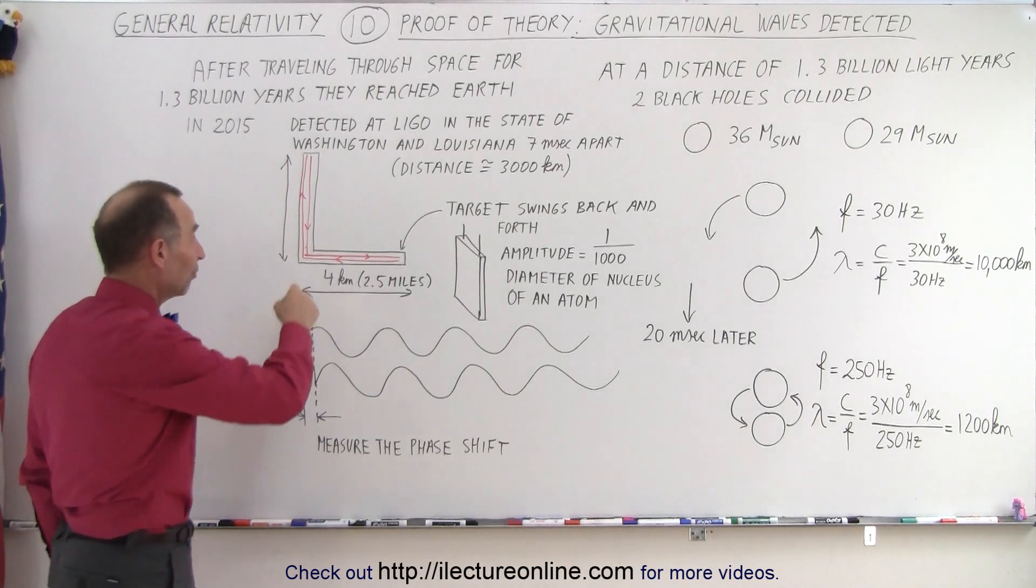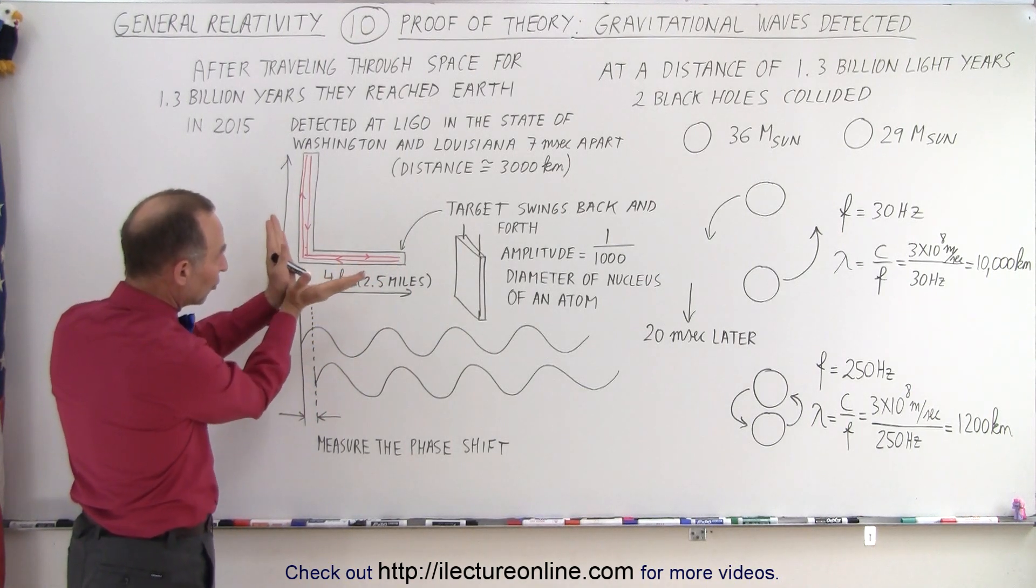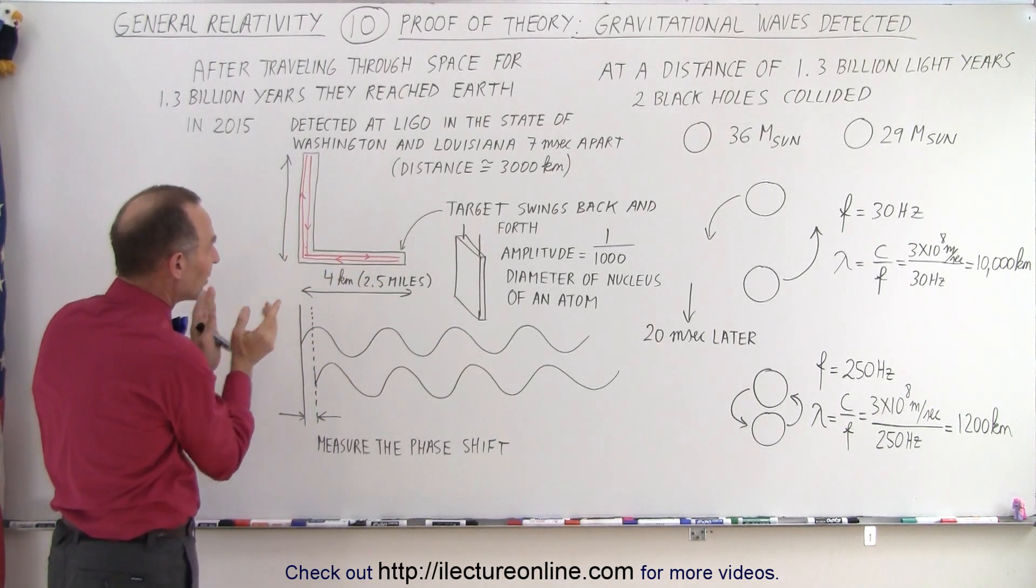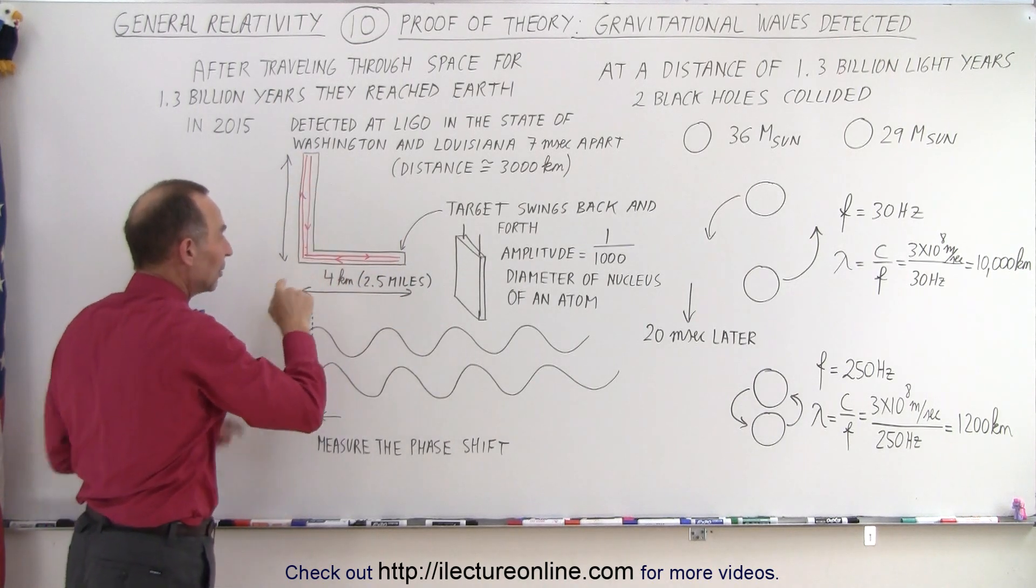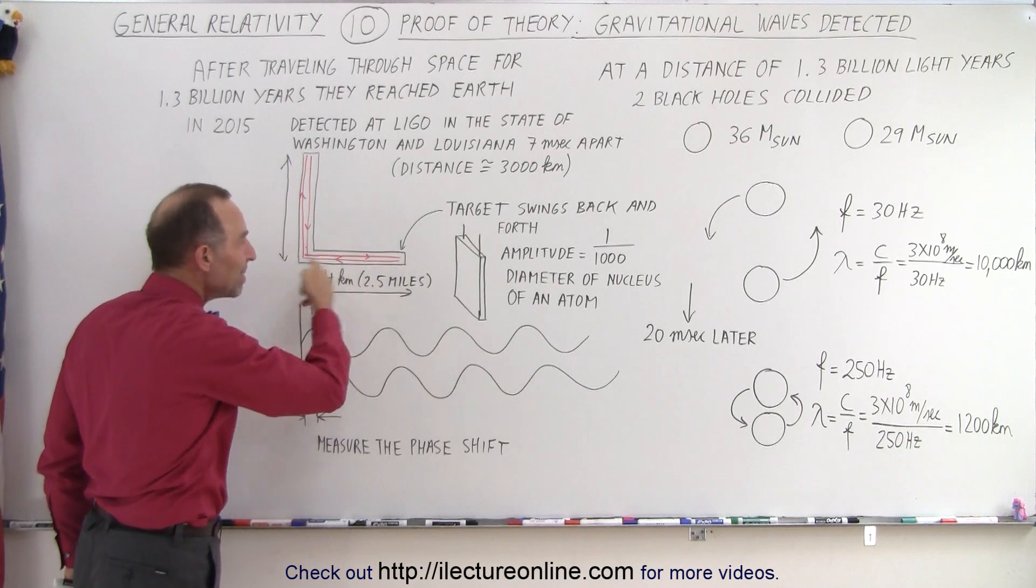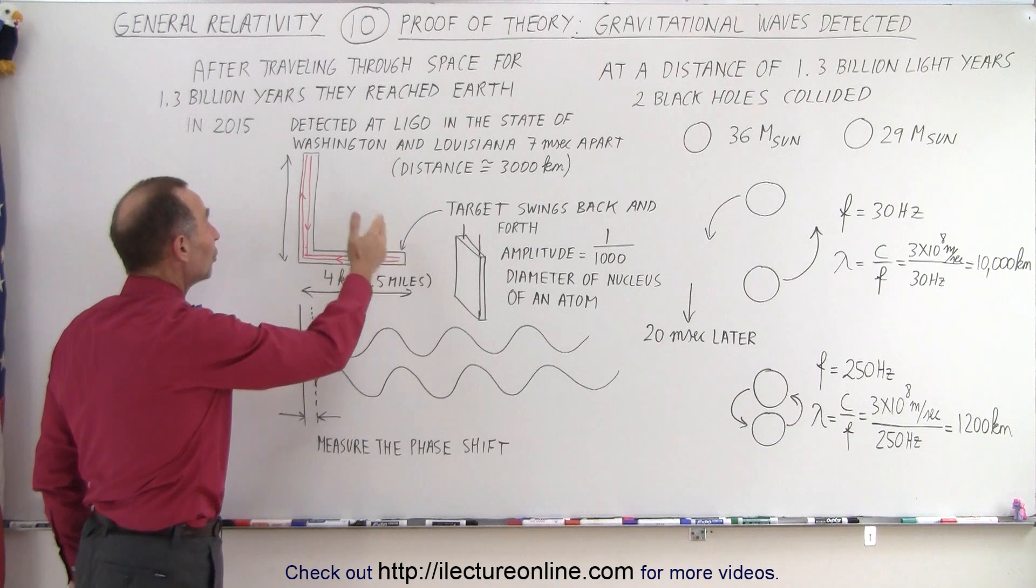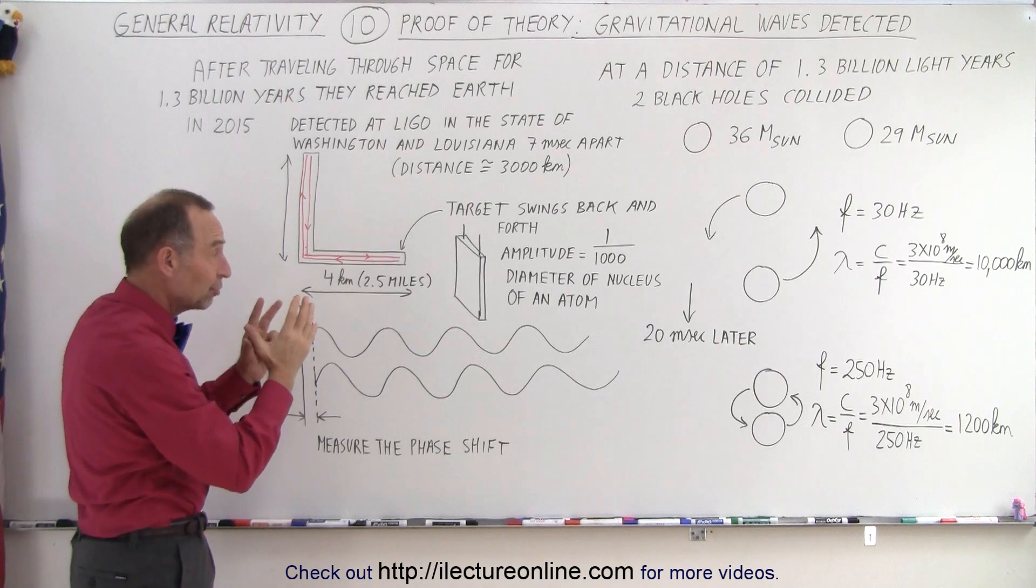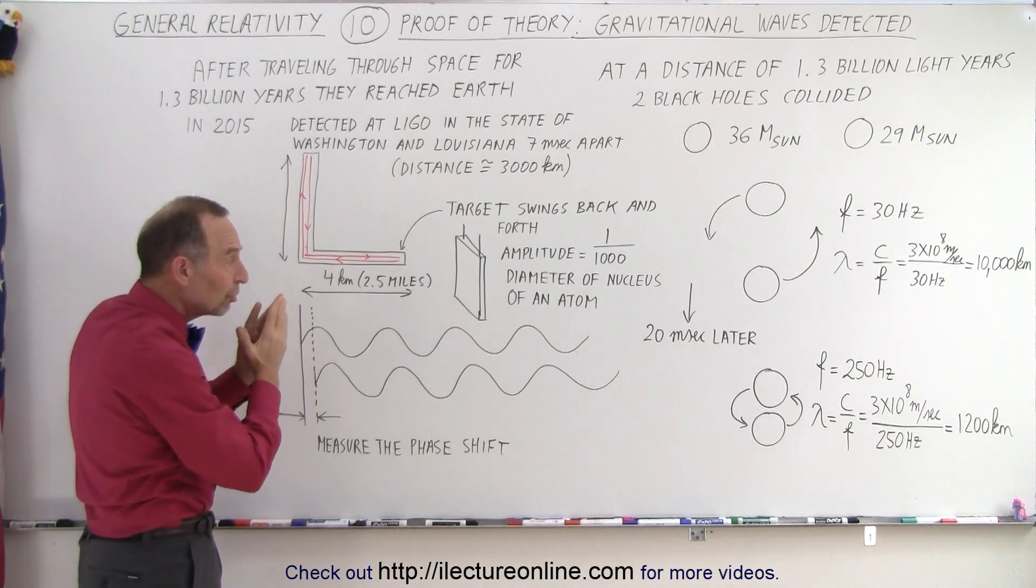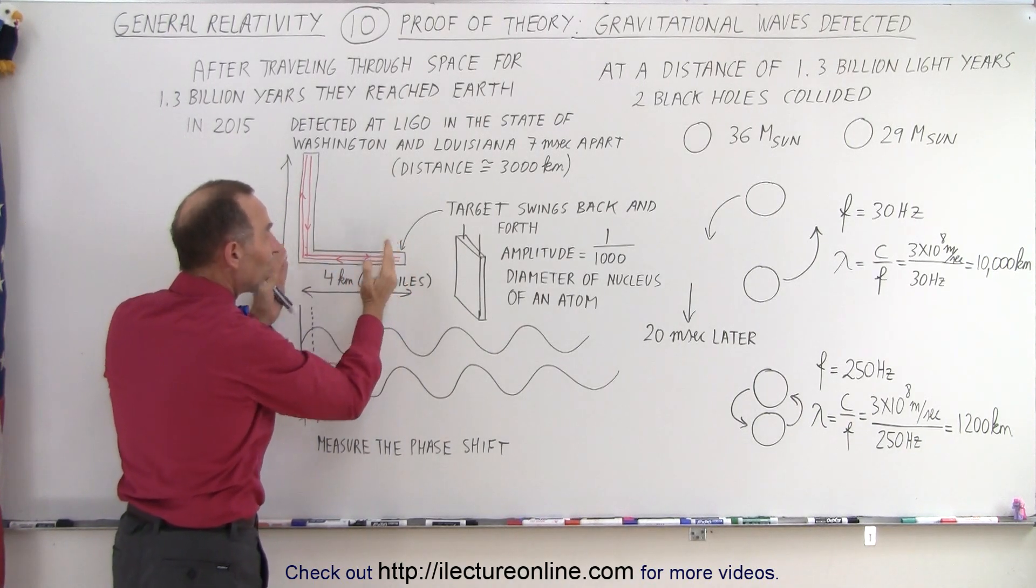The way these work is they have buildings that are 4 kilometers long at 90-degree angles. There's two of those, one in Washington and one in Louisiana State. They send laser beams from the corner into one direction and back, so they reflect off a mirror and they come back. Then they send them in the other direction and come back, and they do that at the same time. They make them go back and forth many, many times. The reason why they're at 90-degree angles is because at both ends of them, there is a target that is able to capture the gravitational waves. It's a very heavy object that will swing along with the gravitational waves, thus changing the length of that path from here to here just ever so slightly.